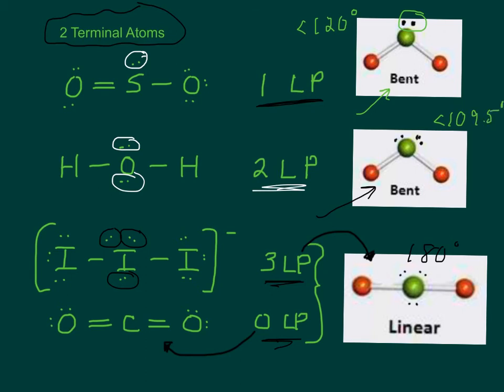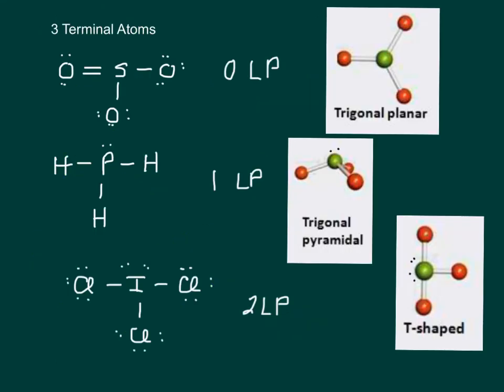So those are the geometries that you would see with two terminal atoms. Well, what if I had three terminal atoms? Again, like SO3, PH3, ICl3, it all depends on three terminal atoms and zero lone pairs is trigonal planar. One lone pair is pyramidal. Two lone pairs is called T-shaped.